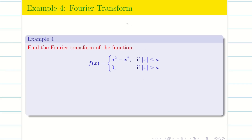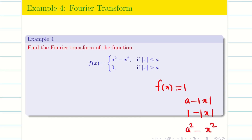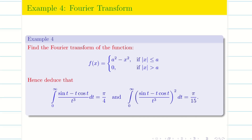In today's session we are going to take an interesting problem: a² - x². Notice the progression — the first problem used 1, the second used a - |x|, the third 1 - |x|, and now a² - x². We are going in ascending order of complexity, and we will do two deductions as usual.